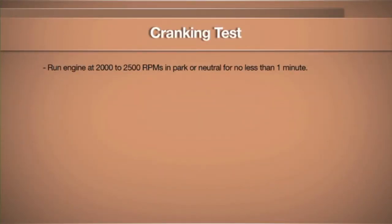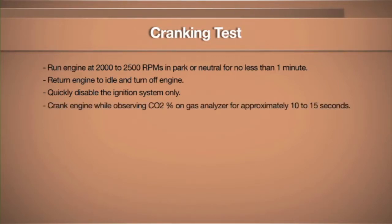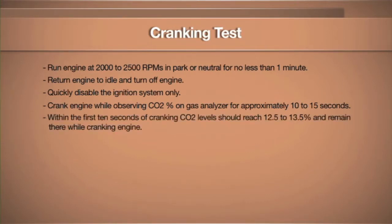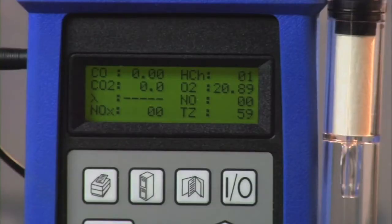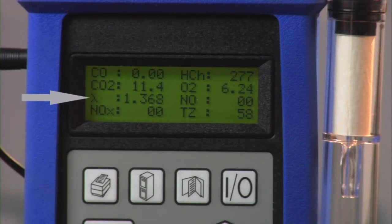Performing a cranking test: we want to prepare the car and pre-condition the cat by running the vehicle at a minimum of one minute at 2,000 to 2,500 RPMs to preheat the catalytic converter. From that point, shut the vehicle down and disable the ignition system as quickly as possible, keeping this to a minimum of one to two minutes. After disabling the ignition system, we crank the vehicle over for 10 to 15 seconds while watching the CO2 levels on our five-gas analyzer. When CO2 levels climb to about 12.5 to 13.5%, this gives us an indication that we're able to take HC and CO and oxidize them in the converter, turning them into CO2. We can see our levels reach 12.2, 13.6, and 13.7 — over the 13% range — confirming this catalytic converter is capable of oxidizing HC and CO into CO2.